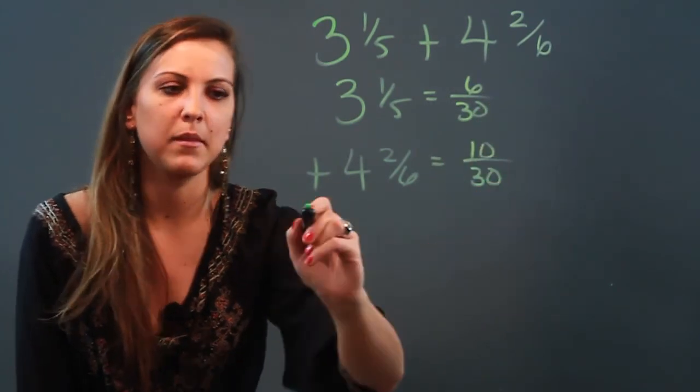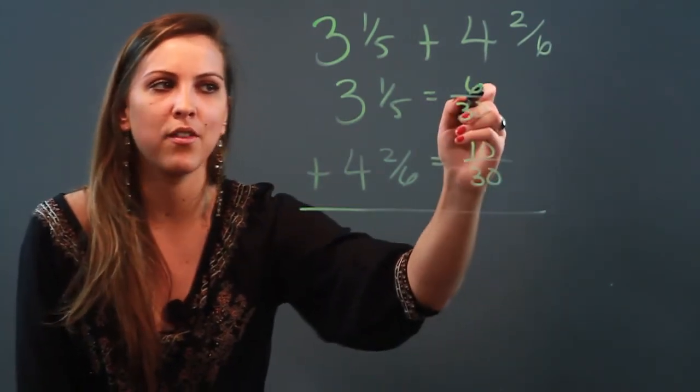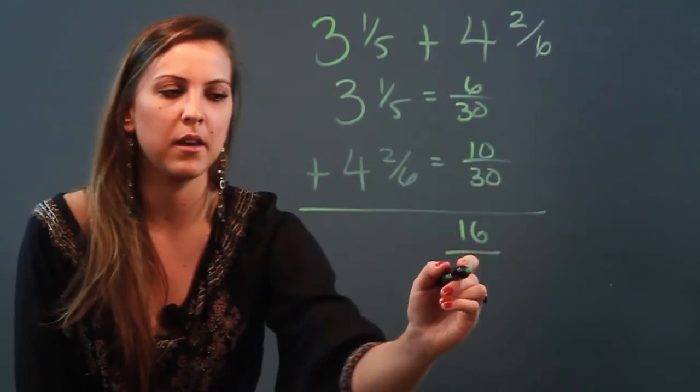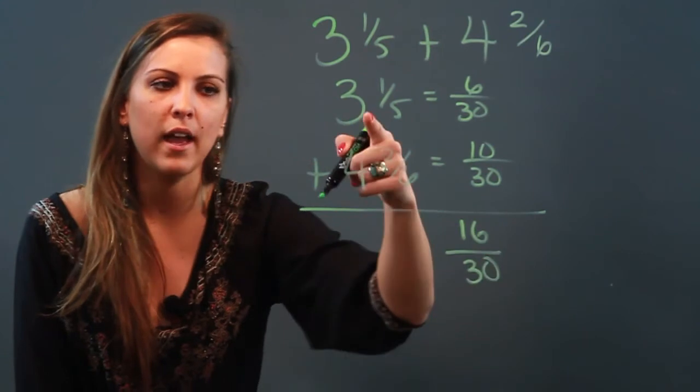Now that my fractions have the same denominator, I can go ahead and add them. I'm gonna add their numerators: 6 plus 10 is 16 over 30. Now I add the whole number part: 3 plus 4 is 7. My answer is 7 and 16/30.